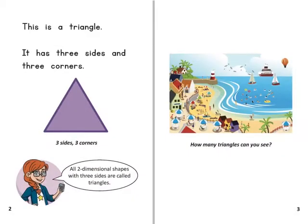This is a triangle. It has three sides and three corners. All two-dimensional shapes with three sides are called triangles.